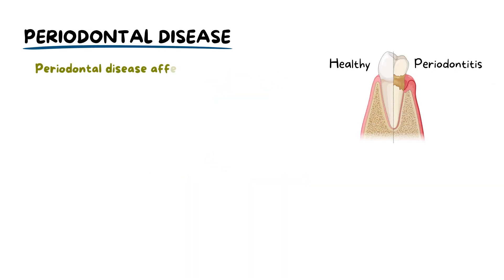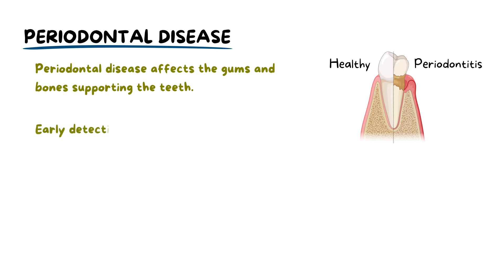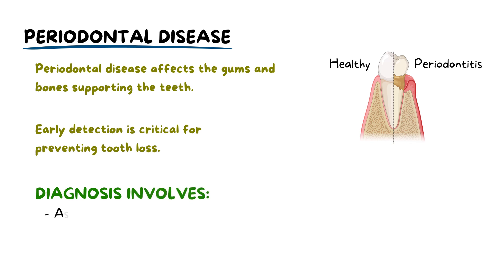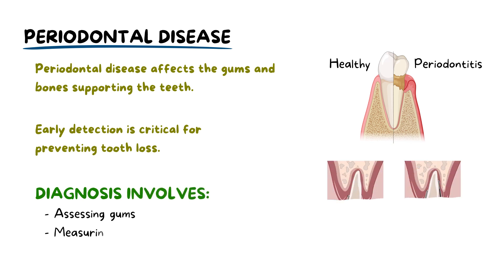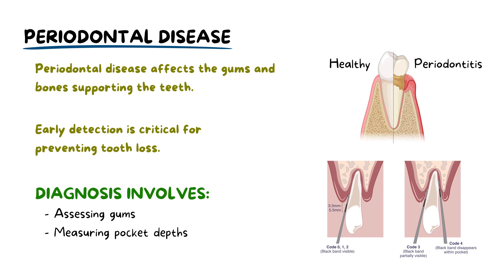Periodontal disease is a common yet serious condition that affects the gums and bones supporting the teeth. For dental professionals, the early detection and accurate diagnosis of this disease are critical to preventing tooth loss and managing oral health. The process of periodontal diagnosis and examination involves a comprehensive evaluation of the gums, measuring pocket depths with a periodontal probe, assessing any clinical attachment loss and identifying signs of inflammation, such as bleeding on probing.